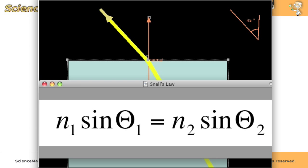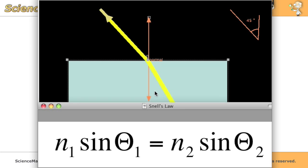Snell's law states that the index of refraction of the first substance multiplied by the sine of the angle of incidence, that's right here, equals the index of refraction of the second substance multiplied by the sine of the angle of refraction, that's right here. The angle of incidence and the angle of refraction are always measured from the normal line to the light ray.